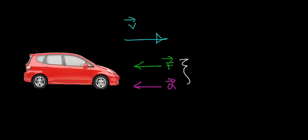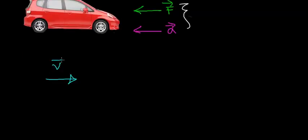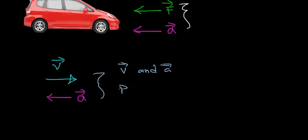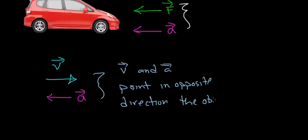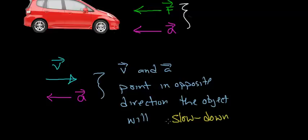We use the word acceleration to indicate that this object is slowing down, because acceleration is a change in velocity per change in time. This reinforces the idea that the English language fails to capture that acceleration simply means a change in velocity per change in time. In this case, the velocity vector is pointing in the positive x direction and the acceleration vector is pointing in the opposite direction. So whenever the velocity and the acceleration vectors point in opposite directions, the object is going to slow down — the object is still accelerating, but its velocity is decreasing.